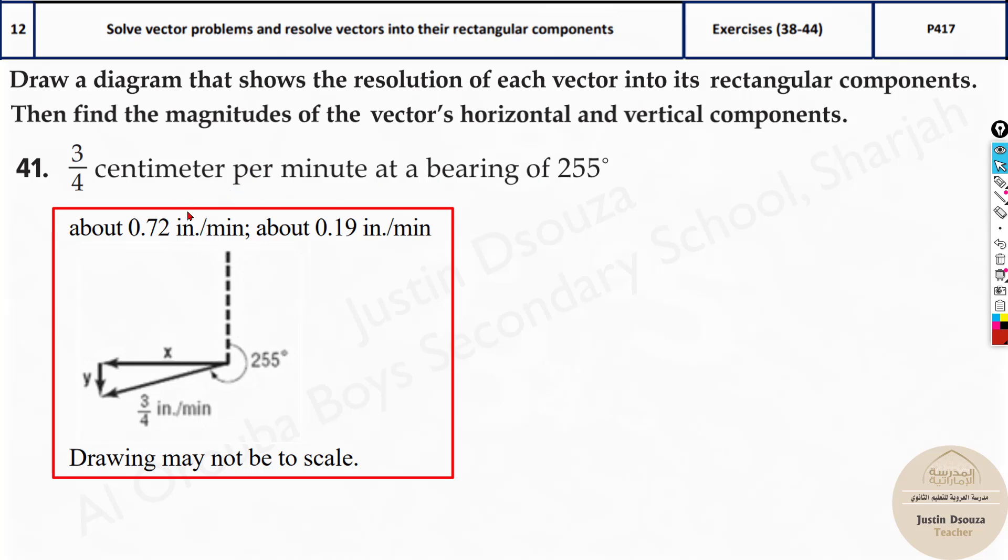Here it is centimeters per minute. Sadly it is wrong here. It should be centimeters per minute, not inches. According to what unit is given in the question, please write it accordingly. You have to just choose the correct answer. So it is much easier in this.